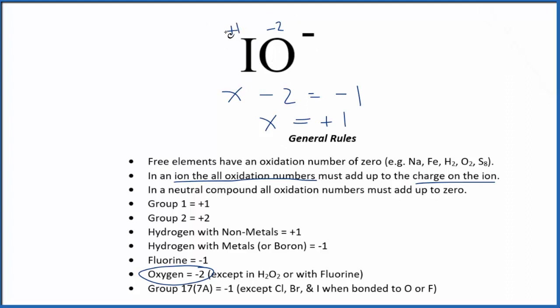And if you add plus 1 and minus 2, you get the minus 1, which makes sense because it all adds up to the charge on the ion. You probably could have just looked at this and figured that out as well, but it's nice to set the equation up and make sure you got it right.